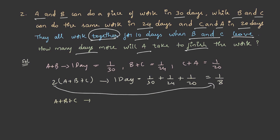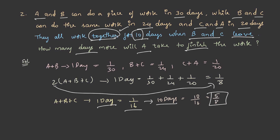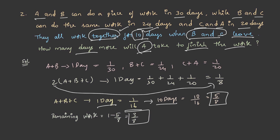Dividing by 2, A plus B plus C's one-day work is 1/16. They worked together for 10 days, so the work done in 10 days is 10/16, which is 5/8. The remaining work is 1 minus 5/8, that is 3/8. Since B and C left after 10 days, A alone must complete the remaining 3/8 of the work.